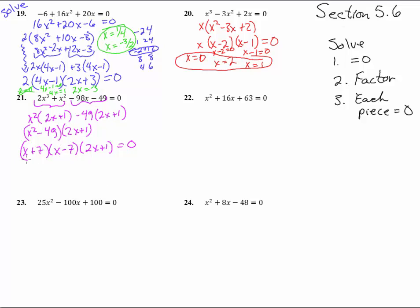So if we set them each equal to 0, x plus 7 equals 0, x equals negative 7. Most of you will be able to do that in your head, say oh negative 7 would make that piece equal to 0 which will give us an answer. x minus 7 equals 0 will give us x equals a positive 7. And then 2x plus 1 equals 0 will give us 2x equals negative 1, it gives us x equals negative 1/2. So let's highlight those guys. Those are the three answers for number 21.